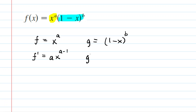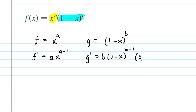For g prime, we have to be careful and use a chain rule along with the power rule. It's similar — we drag b into the front, recopy the inner function, and subtract 1 from the original power. But then the chain rule requires us to multiply by the derivative of the inside. We have 1 minus x, so the derivative is 0 minus 1, which is just negative 1. So that is the derivative of g.